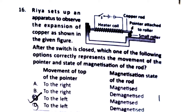Question 16 (magnetization): When the switch is closed in the given apparatus setup, the pointer moves. Since copper does not heat up, the pointer deflects to one side. As heating continues, the demagnetization process begins, and the pointer moves to the right side — this is the right answer.